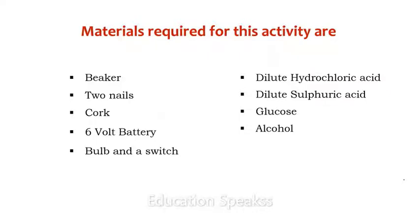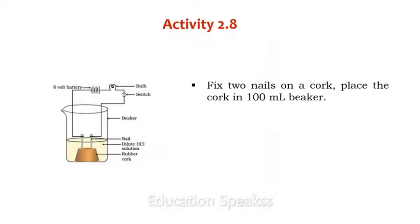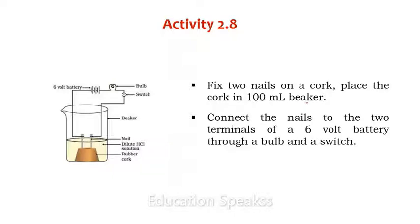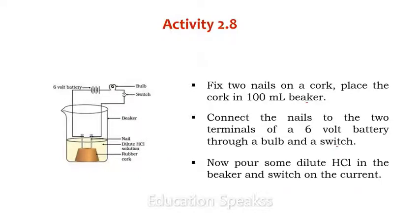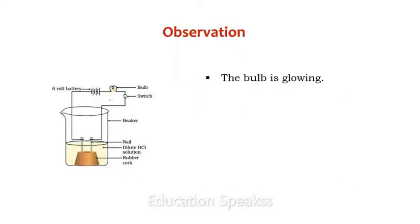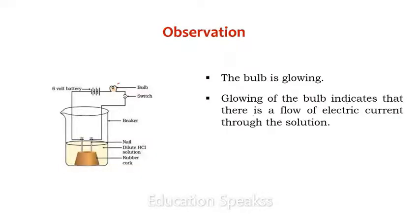Let us perform this activity. Fix two nails on a cork and place the cork in a 100 ml beaker. Then connect the nails to the two terminals of a 6-volt battery through a bulb and a switch. Now pour some dilute hydrochloric acid in the beaker and switch on the current. We can see here that the bulb is glowing.